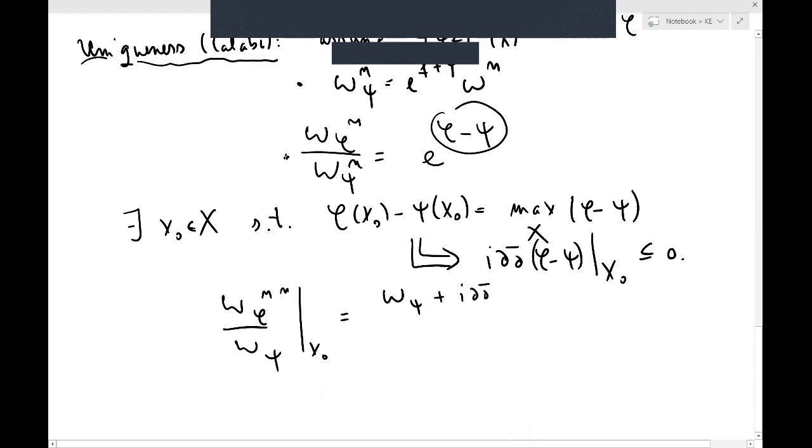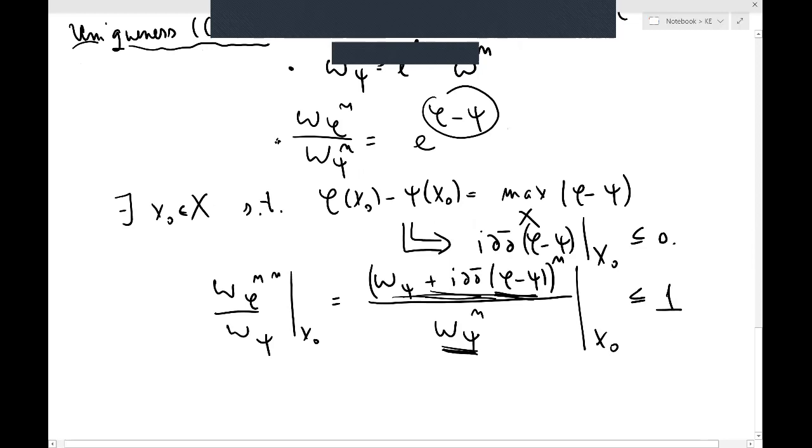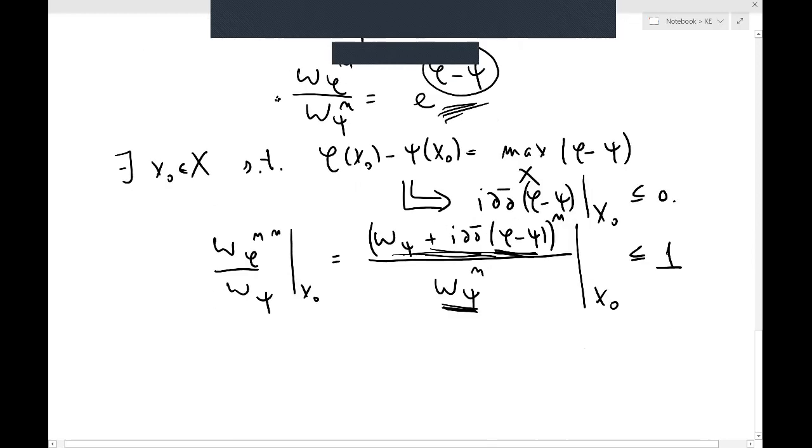So that is going to be omega_ψ plus i∂∂̄ of φ minus ψ. I just learned that at x_0, this is negative semi-definite. So this form here is less than this one form down here. So this all together, when you compare determinants, will be less than 1. So what I will get is that the left-hand side is less than 1, so here the right-hand side is also less than 1 at x_0, of course.